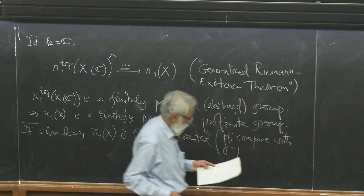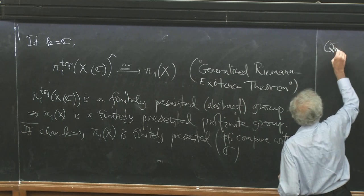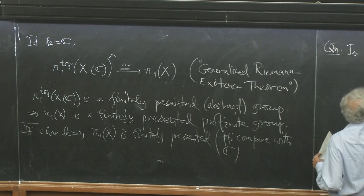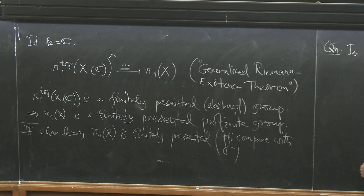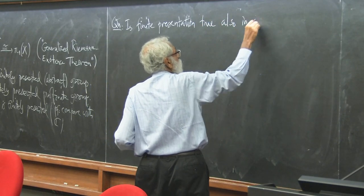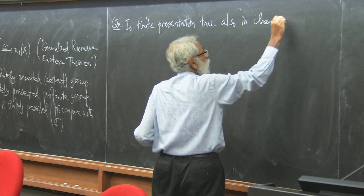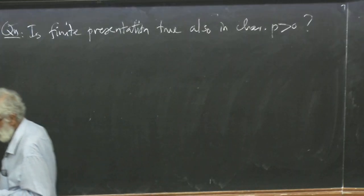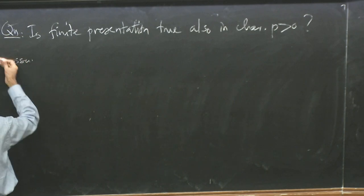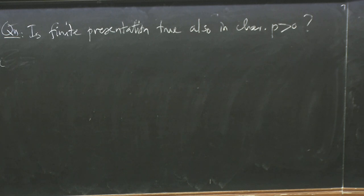There are theorems telling you what happens to the algebraic fundamental group when you change the ground field from one algebraically closed field to another. From this, one can deduce that if the characteristic of K is 0, then π₁(X) is finitely presented. The proof is by comparison with ℂ. So the natural question is: is finite presentation in the profinite sense also true in characteristic p? It's a natural question, and this is a conference related to characteristic p geometry, so it's natural to bring this in.